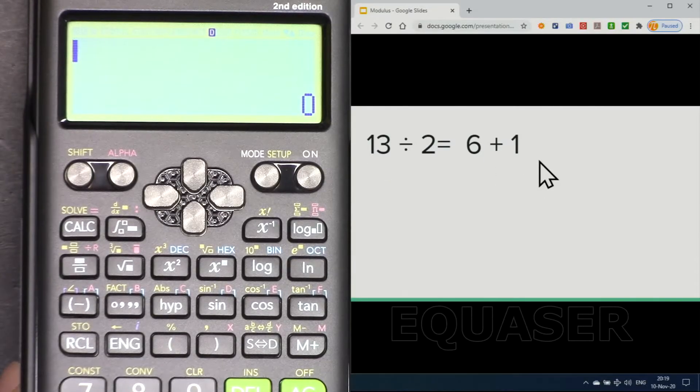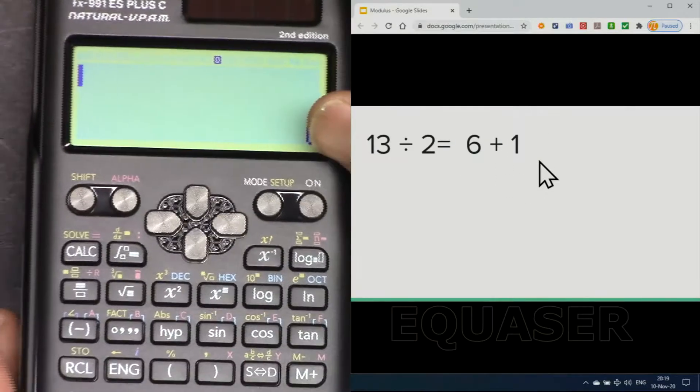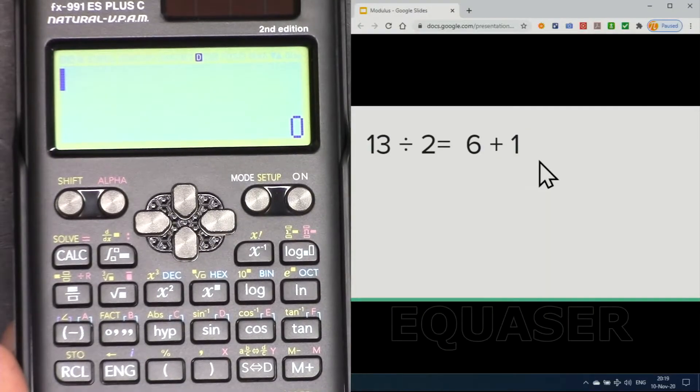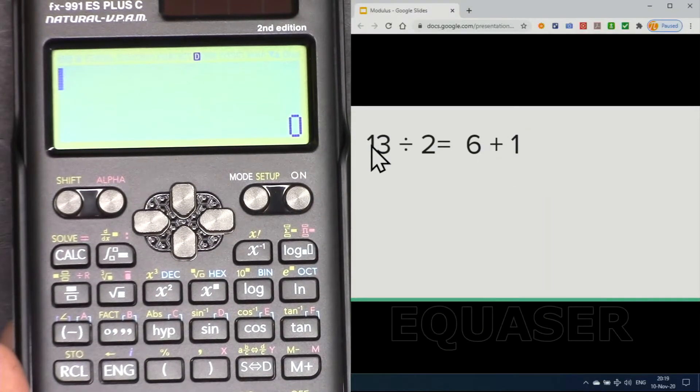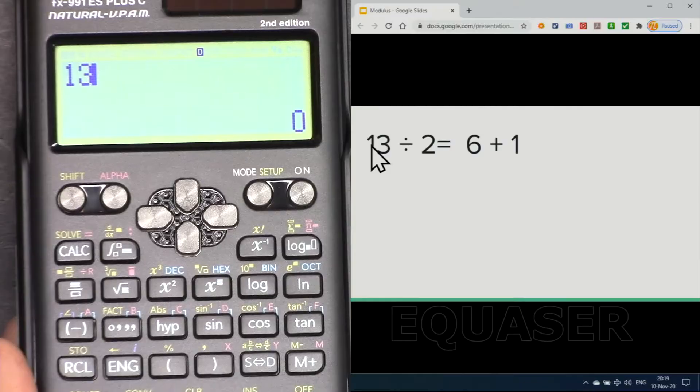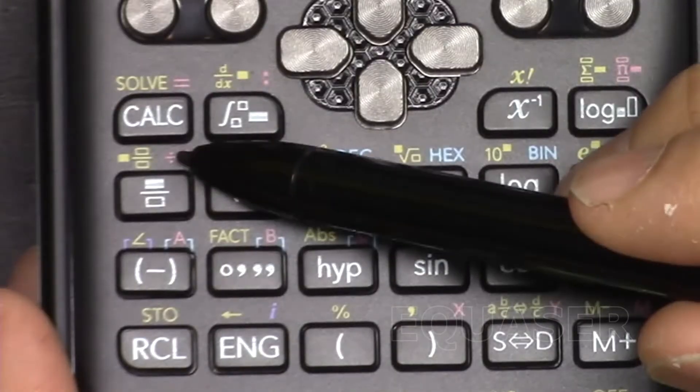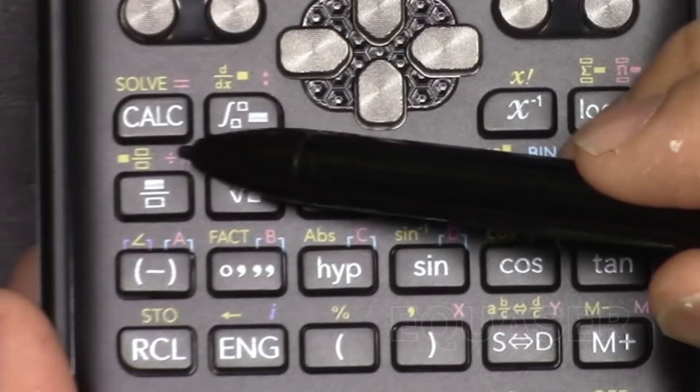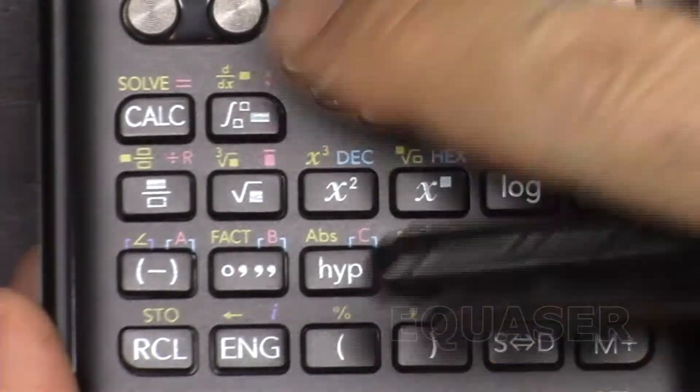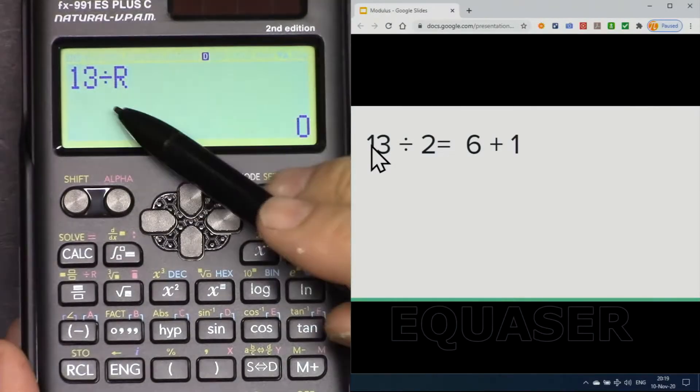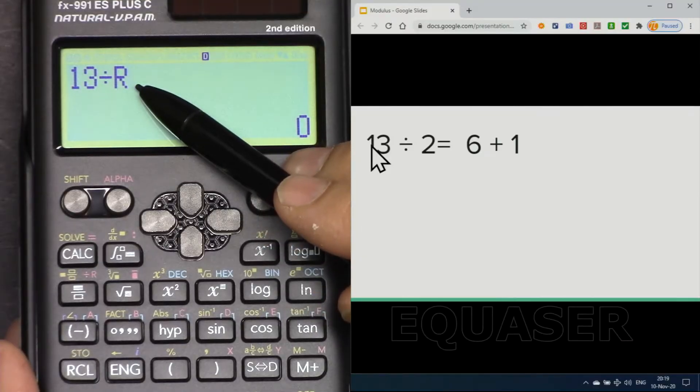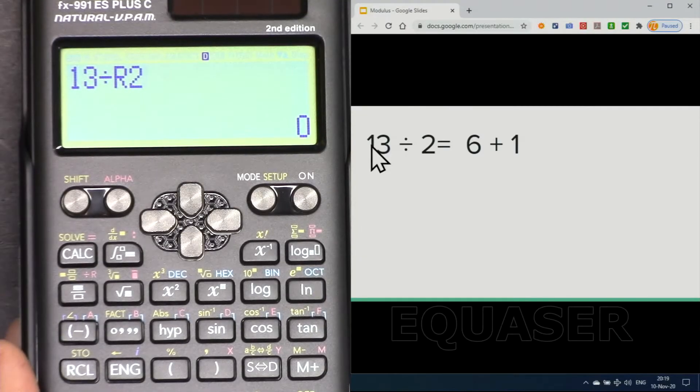So we enter 13, and for the remainder and for remainder or modulus we use this divide and then R division. And for R with the alpha, we press alpha. So you will see now the divide and R, and then put 2 and then equal sign. It gives you the answer and it gives you R equal 1.